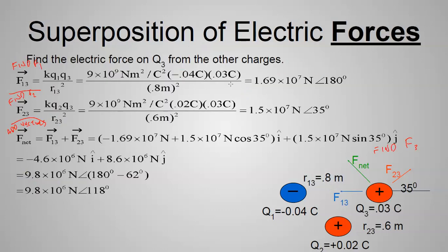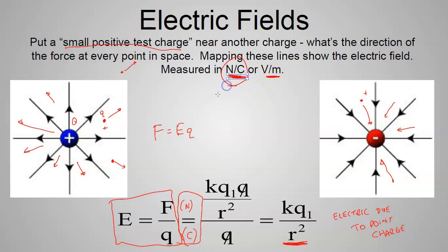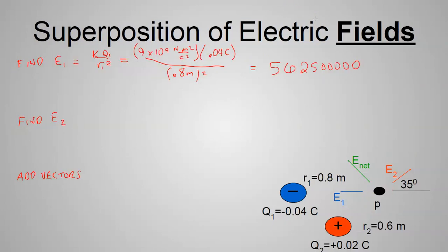The units for electric field can be either newtons per coulomb or volts per meter — they're equivalent. If you take force in newtons divided by charge in coulombs, you get newtons per coulomb, which makes perfect sense. For now let's stick with newtons per coulomb.